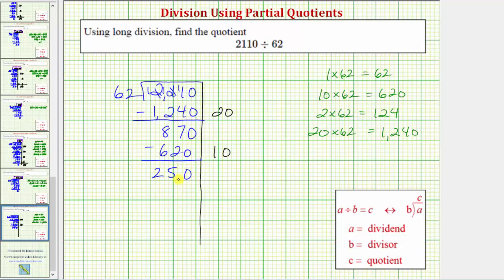Because the difference is 250, we now need to determine a certain number of 62's that we know for sure are in 250. Going back to our products, notice how 124 is less than 250. And because 124 is equal to 2 times 62, we know there's at least two 62's in 250.